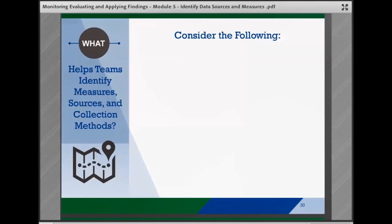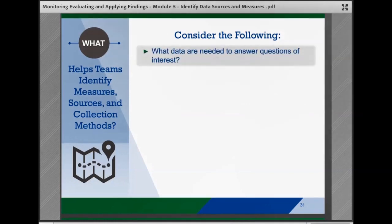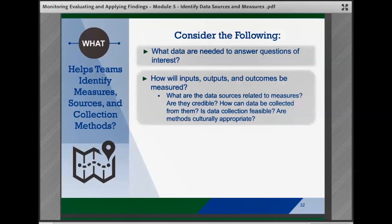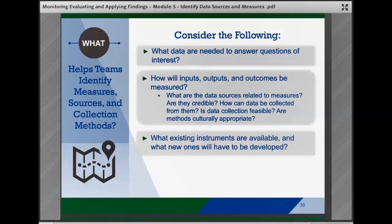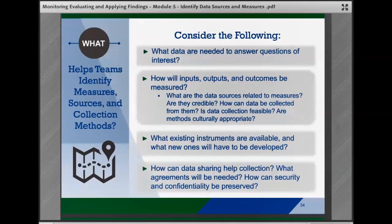Teams should review key questions and considerations when identifying measures, data sources, and potential data collection methods. What data are needed to answer the questions of interest? How will inputs, outputs, and outcomes be measured? What are key data sources related to these measures? Are these sources credible? How can data be collected from the source, and is data collection feasible? Are data collection methods culturally appropriate? What existing instruments are available and what new ones will have to be developed? How can data sharing help collection? What agreements will be needed? And how can security and confidentiality be preserved? Discussing these questions as a team will strengthen the team's ability to identify the measures, sources, and collection methods that will help to answer the questions of interest.